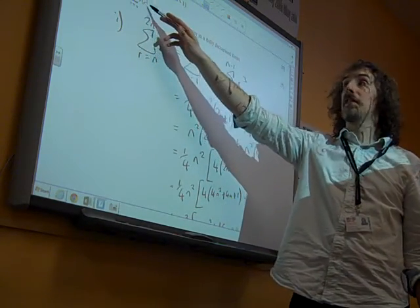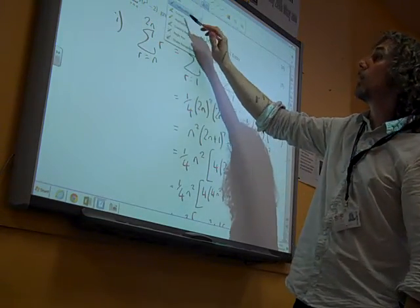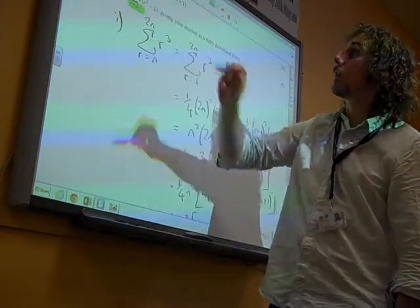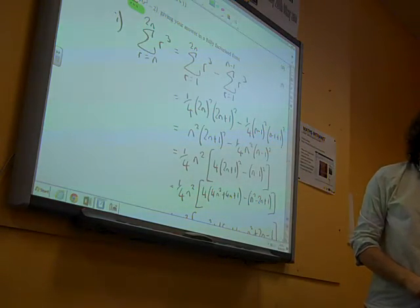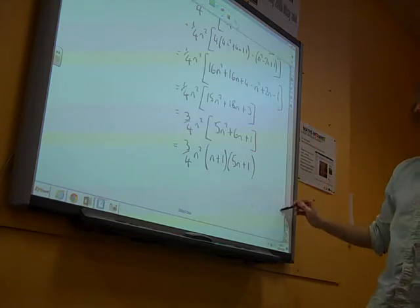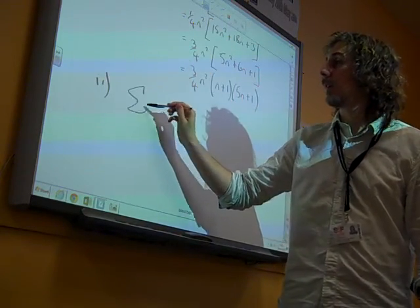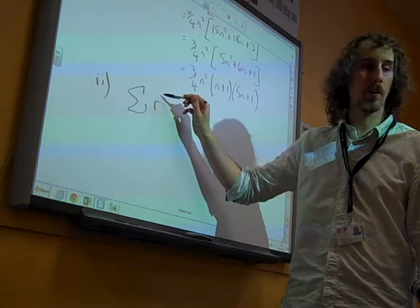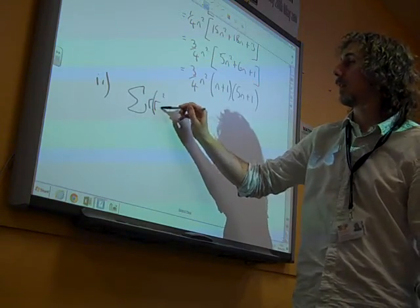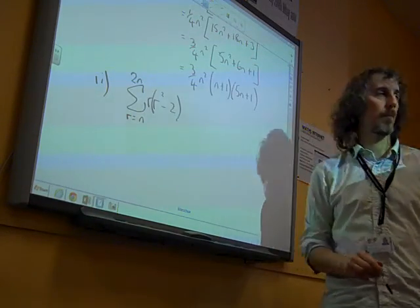Right. Hence, find this expression, giving your answer in a fully factorized form. Look, we're being really careful to read these properly. So we notice the N and the 2N there, and we notice we've still got N to 2N at the bottom there. So we're going to be careful with that. So this new expression, R brackets R squared minus 2, as R goes from N to 2N.